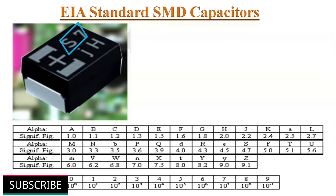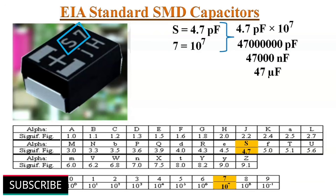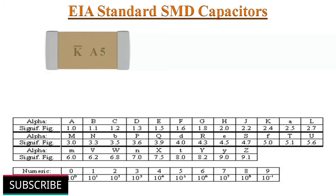For example, if S7 is printed on an SMD tantalum capacitor surface, S represents 4.7 pF and 7 represents a multiplier of 10 to the power of 7, giving a capacitance value of 47 microfarads. An additional alphabetic letter J at the bottom indicates a voltage rating of 6.3 volts, so it is a 47 microfarads 6.3 volt capacitor.